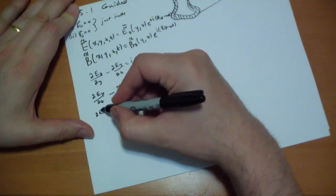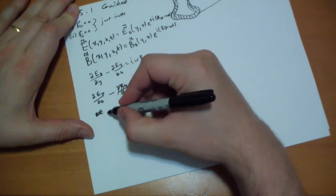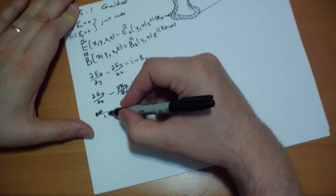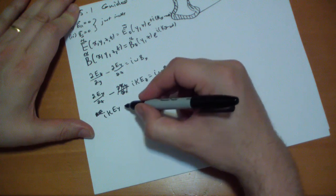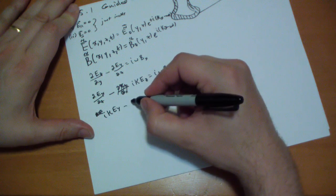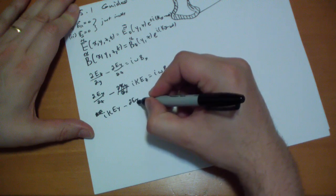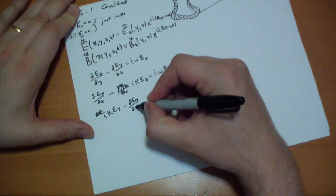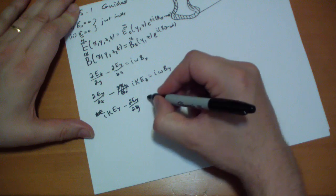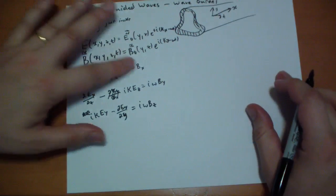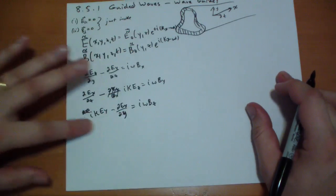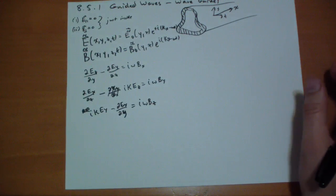Next: i·kappa·E_Y minus the derivative of E_X by dY equals i·omega·B_Z. Those are the three equations for the components of the B field.